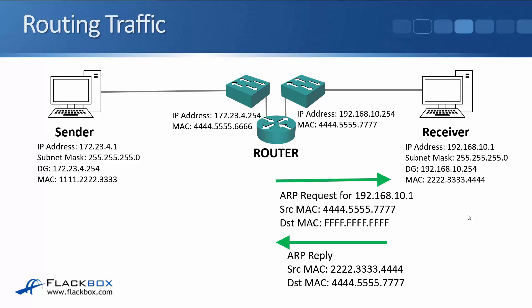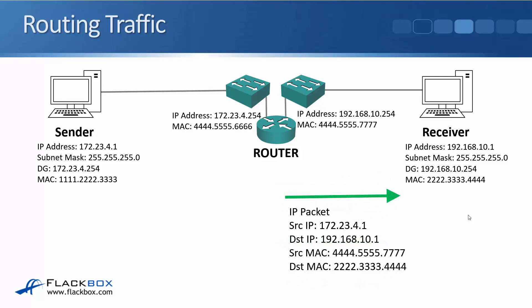The router now knows the MAC address of the final destination and sends the IP packet. The IP information never changes end-to-end: the source IP is always 172.23.4.1 and the destination IP is always 192.168.10.1. However, the MAC address source and destination change physical hop by physical hop — in this final hop, source MAC is 4.5.7 and destination MAC is 2.3.4. We'll look at that in more detail in the next lecture.